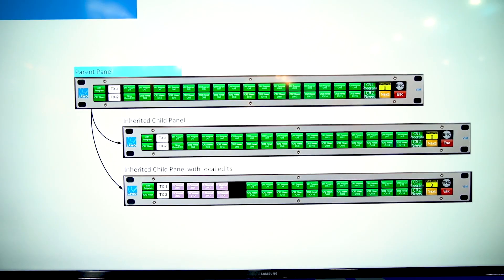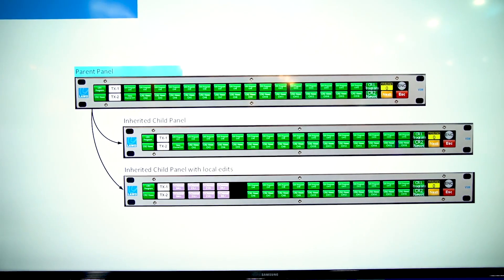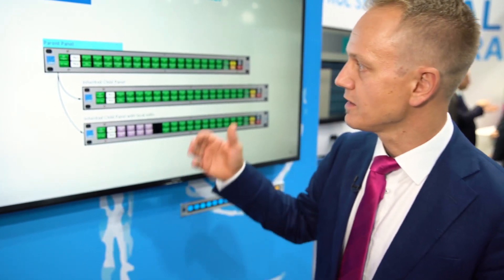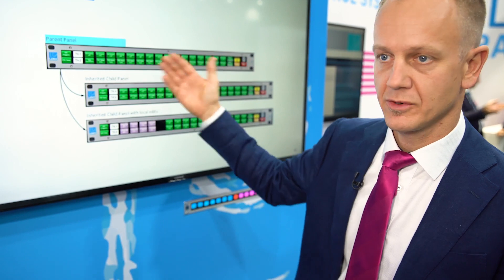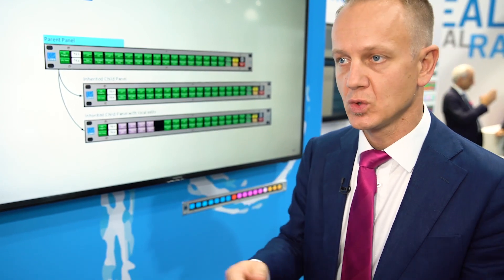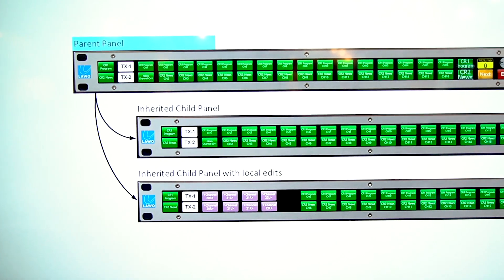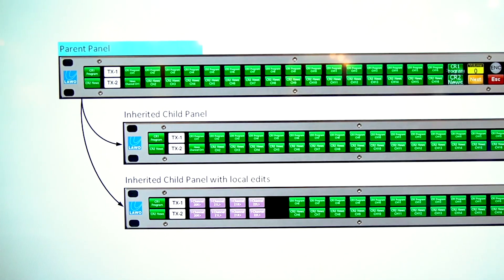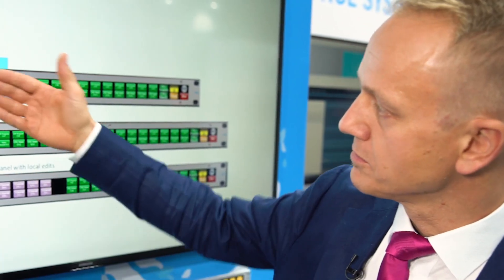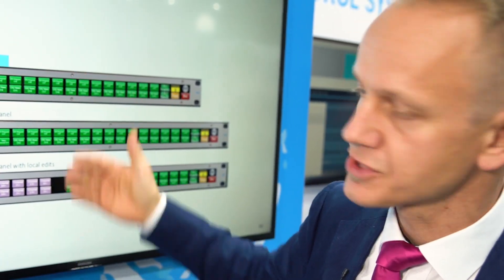With Panel Inheritance we are now creating a hierarchy between panels — a relationship of a mother panel to child panels, which takes care of deploying changes live and during runtime. We have a mother panel or parent panel which holds the basic configuration, and you create child panels out of this mother panel. Any change you deploy to the mother panel will be inherited by the child panel at any time, because that relationship remains live.